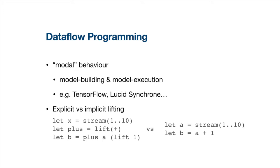Most of these languages or libraries exhibit a kind of model behavior, in which you have a model building mode where you create the graphs, and then a model execution mode where you run or execute the graphs with certain inputs. There is also a difference between explicit versus implicit lifting. On the left-hand side, you have a program that requires the programmer to explicitly lift operations to work on streams, while on the right-hand side, the operators are implicitly lifted to work on streams.